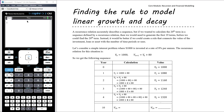Instead, we want a rule in terms of n — a rule that lets us substitute n = 50 and immediately get the answer after 50 years, without working out values for years one through 49. This is possible when we're dealing with linear growth or decay — adding or subtracting a fixed value each time period.